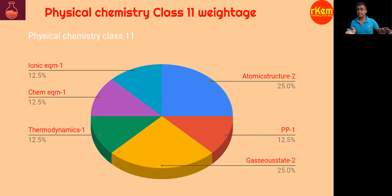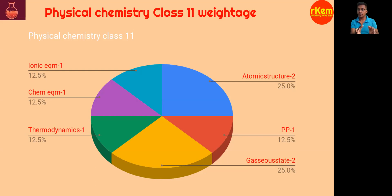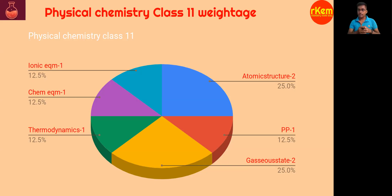This is the complete latest question paper analysis. For periodic properties, they give an element's atomic number and ask which period and group it belongs to — one simple question. Also, atomic number 106 and its IUPAC name may be asked. Ionization energy order and atomic radius order — those kinds of questions.